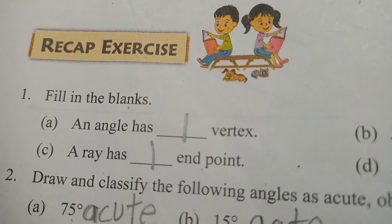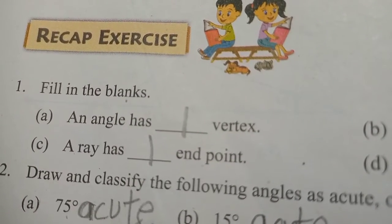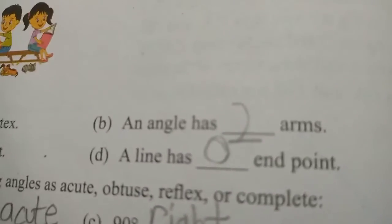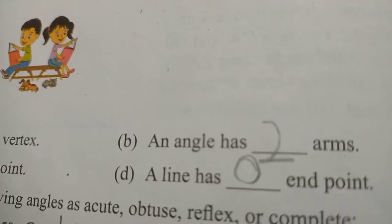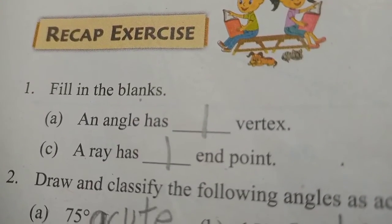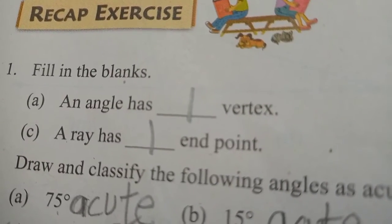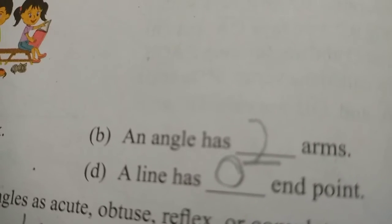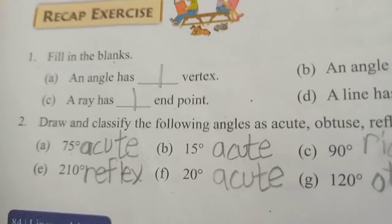First question: fill in the blanks. (a) An angle has ___ vertex - one vertex. (b) An angle has ___ arms - two arms. (c) A ray has ___ end point - one end point. (d) A line has ___ end point - zero end points.